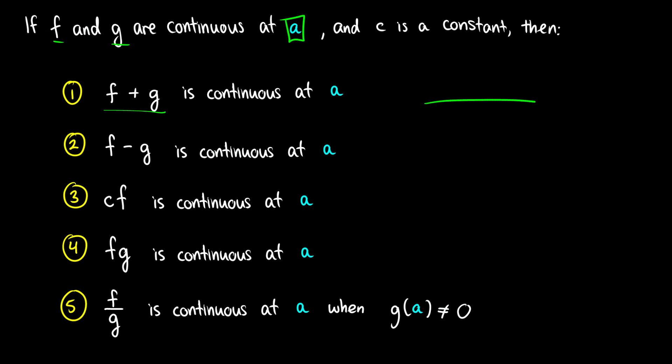If we think about this on a graph and we have two straight lines — continuous lines — and we take a look at a point a, if we add those two points together we just get a new point that's a little bit taller. So if we add these two curves together, we end up with another continuous function at a higher point.